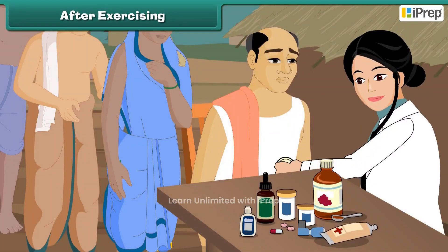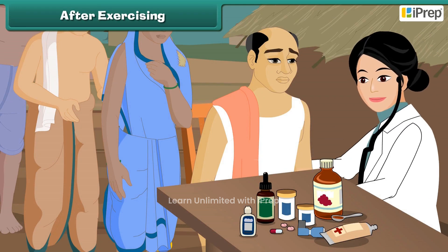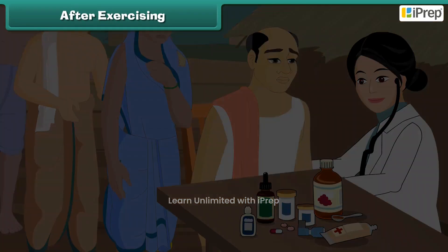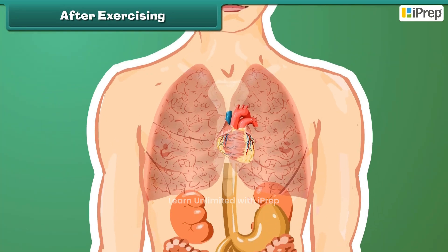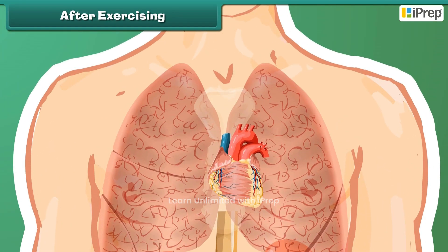A doctor using a stethoscope hears the heartbeat — the sound that comes from our heart. The heart is an organ that lies on the left side of the chest and beats continuously.